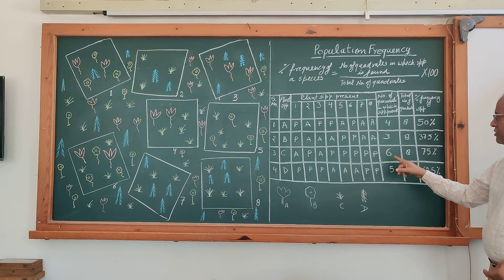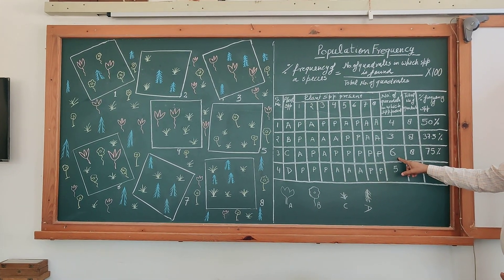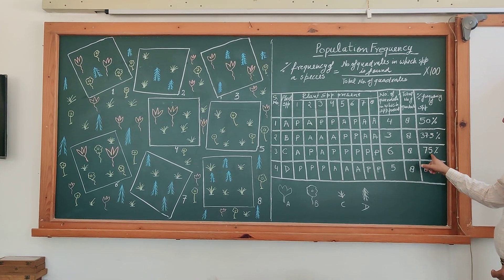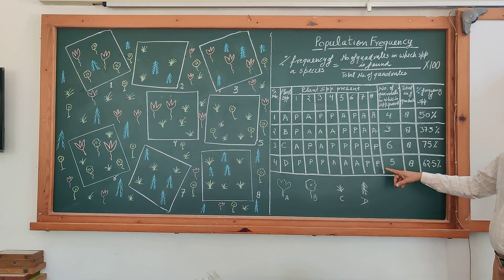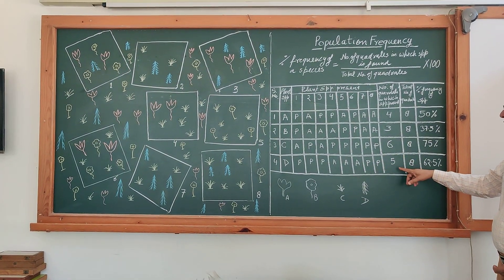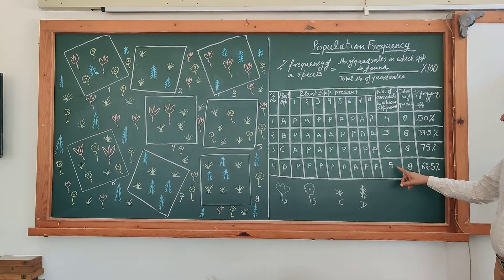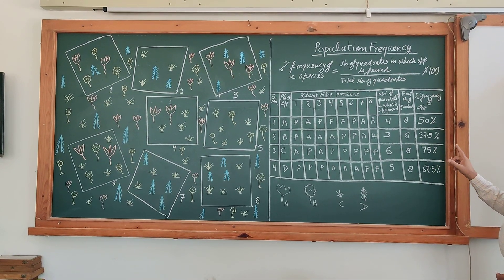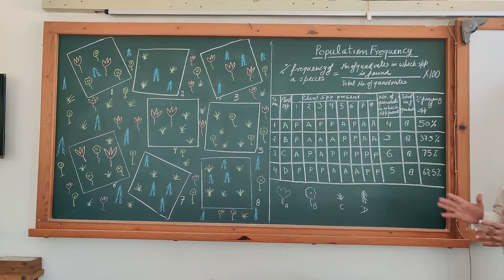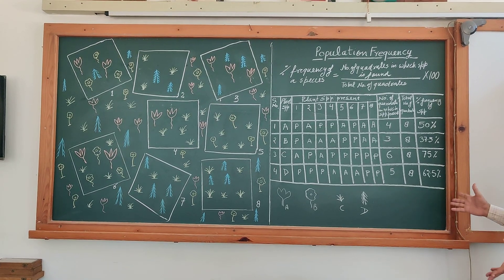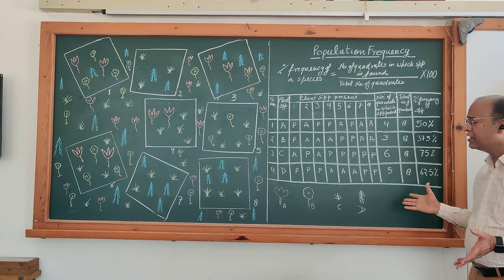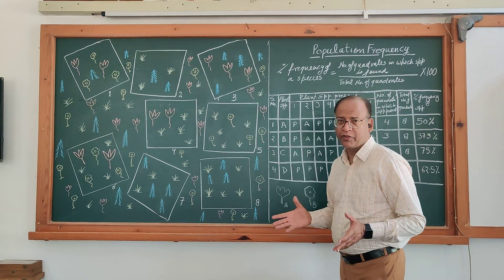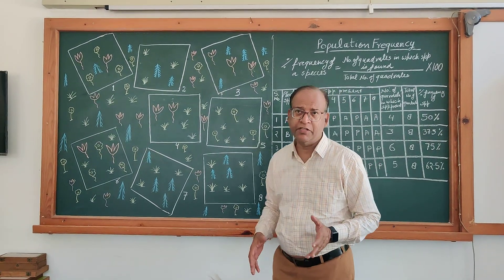Species C: its percentage frequency is 75 percent. And species D: its percentage frequency is 62.5 percent. So very simply, we can calculate the population frequency of different species.